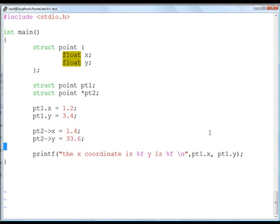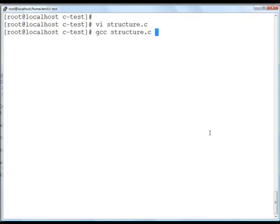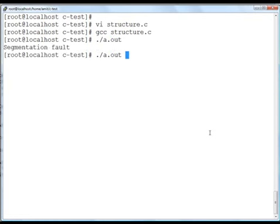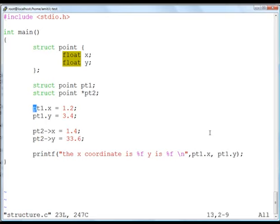But remember I have not yet allocated any memory to this pointer pt2. This pointer pt2 is still null. By default whenever new pointer is defined it is assigned value null or it can be either garbage as well. If I simply go ahead and compile this program, this program will get compiled properly but while running the program at runtime I will get a segmentation fault.